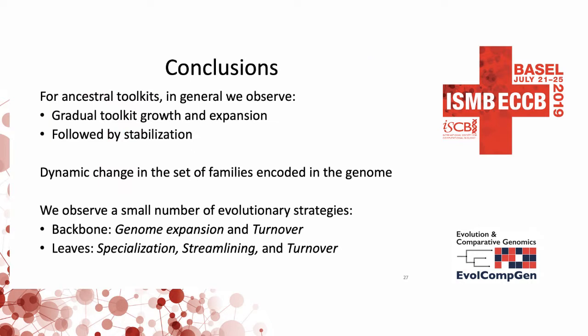In conclusion, for ancestral toolkits we observe gradual toolkit growth and expansion followed by stabilization. We also observe dynamic change in the set of families encoded in the genome, and these changes reflect a small number of evolutionary strategies. On ancestral branches, we tended to observe genome expansion and genome turnover, while on branches to leaves we observe specialization, streamlining, and turnover.